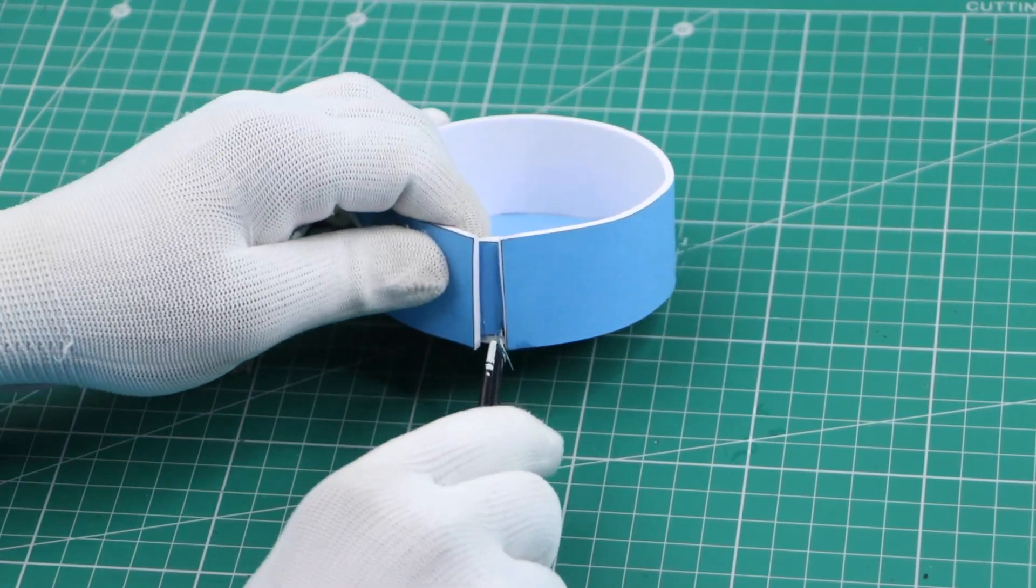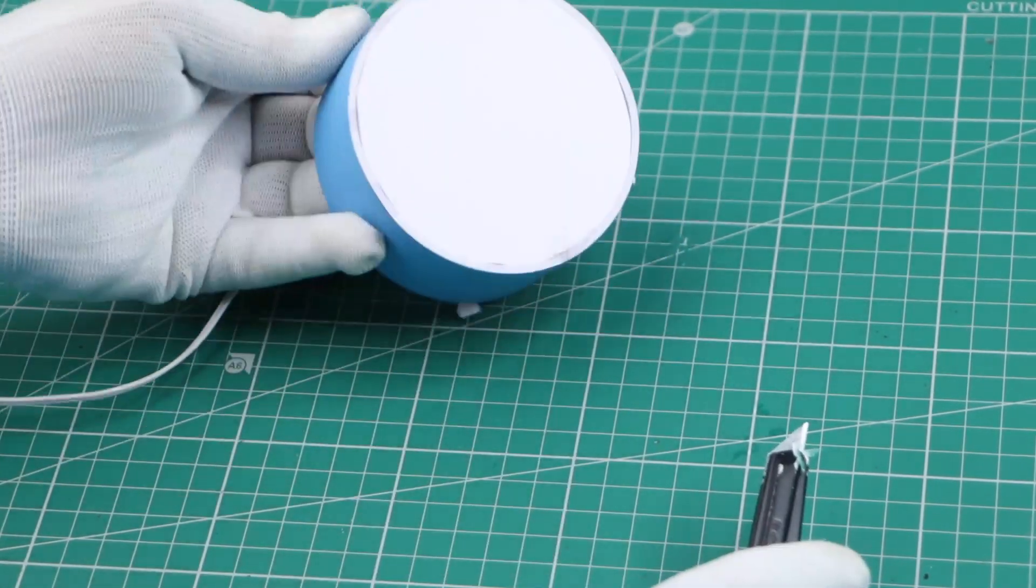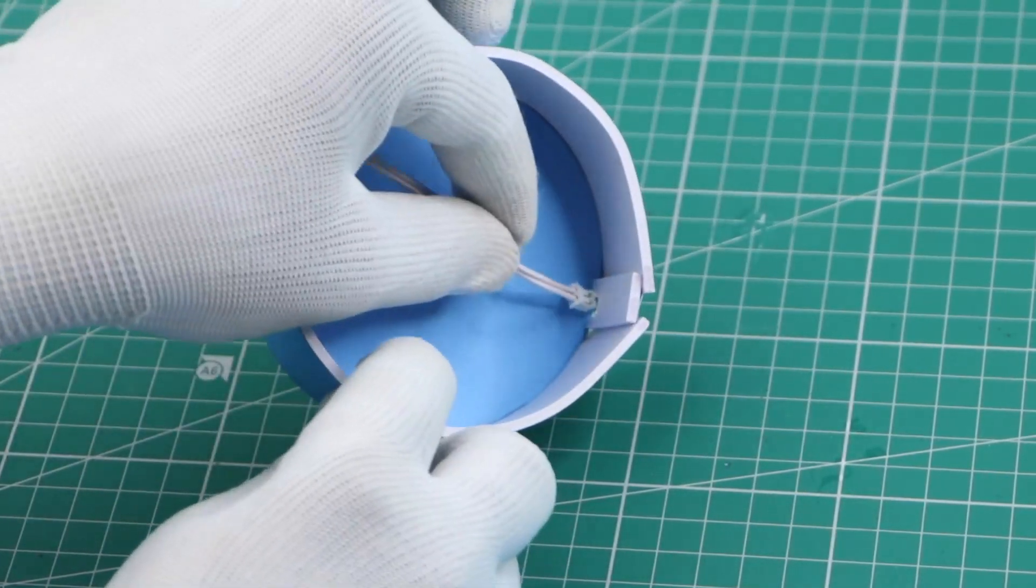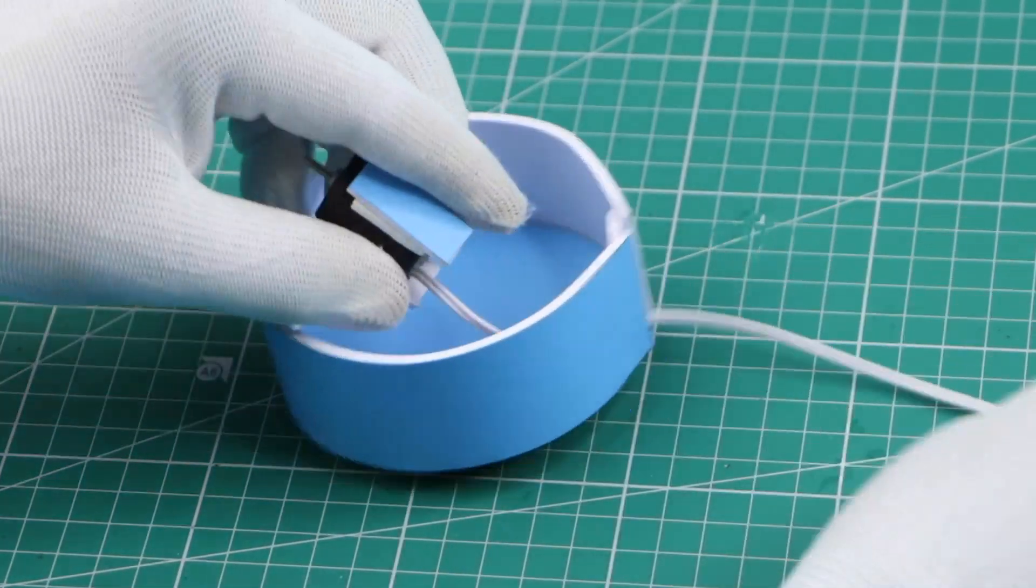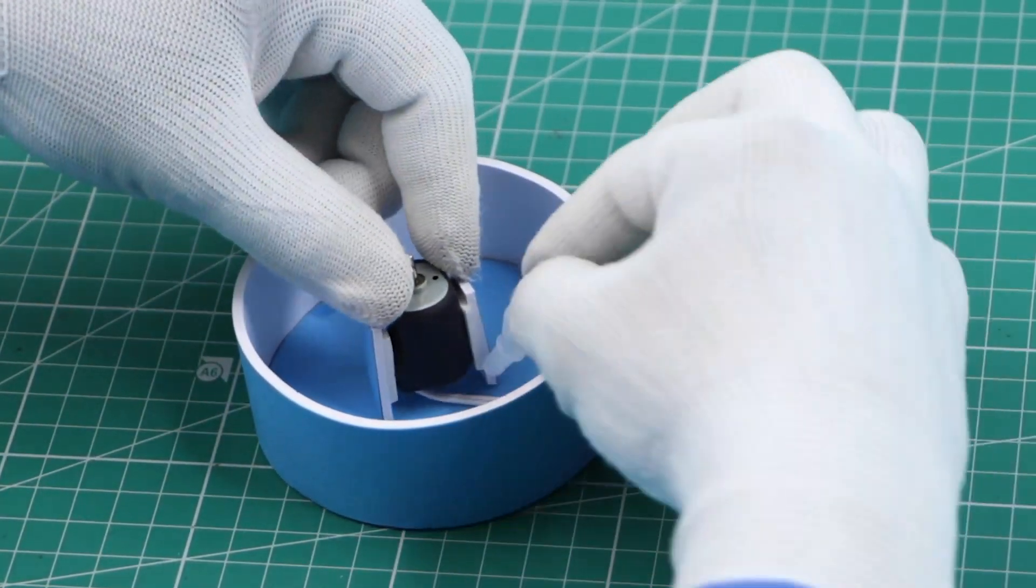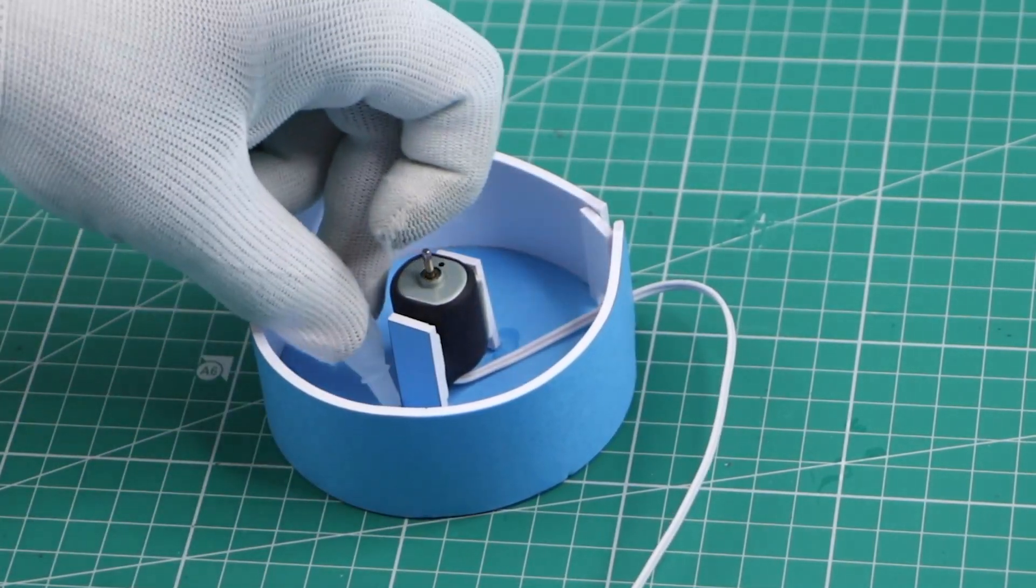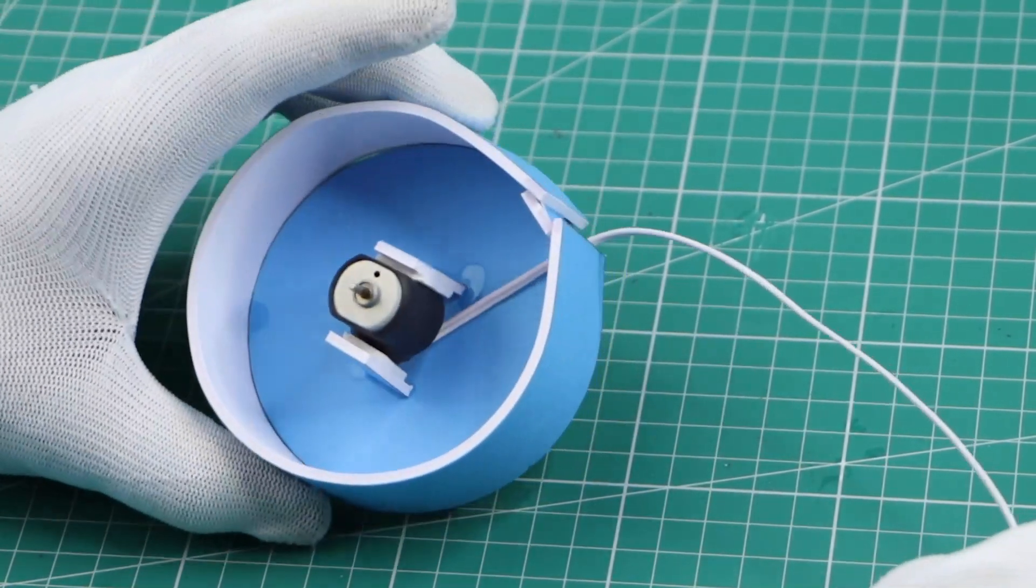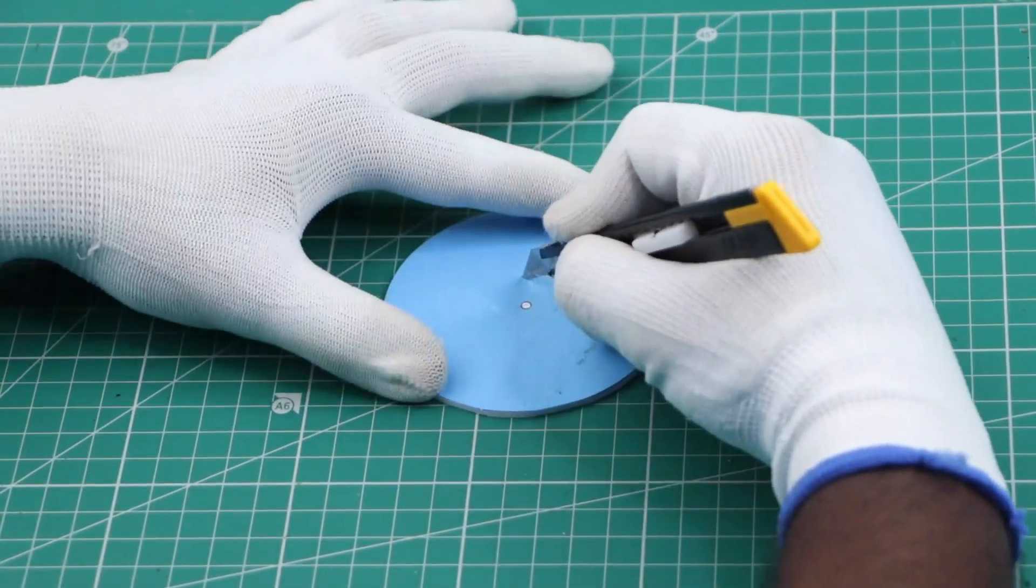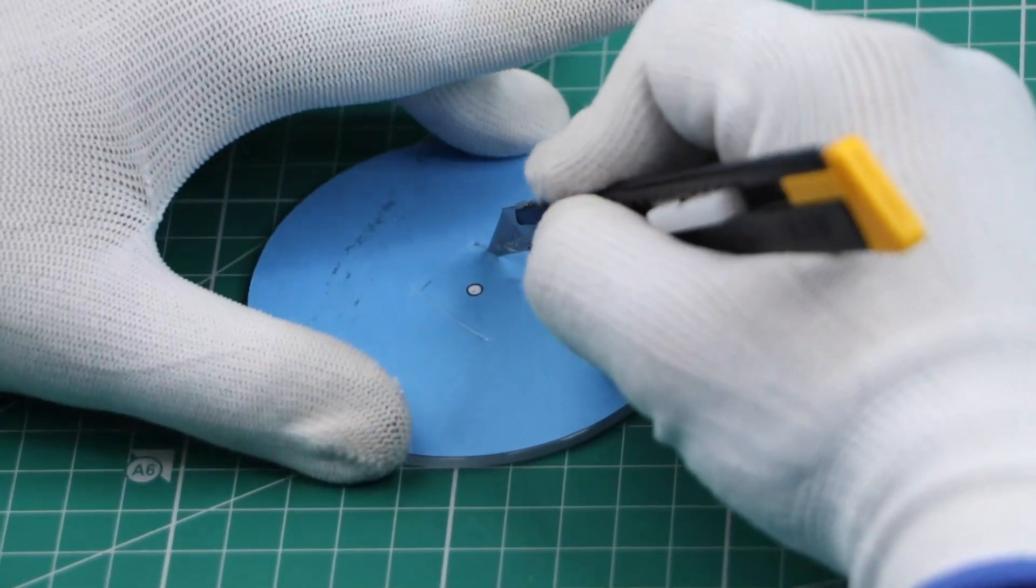We have to create a small hole for the wire to pass through. Cut a small square as shown. It should be slightly bigger than the motor diameter.